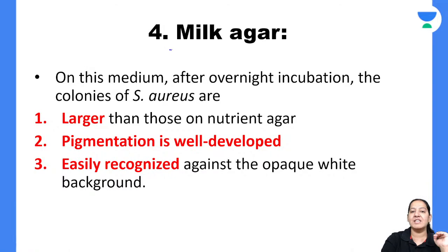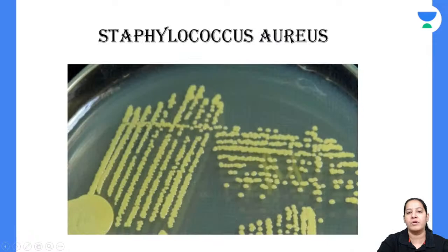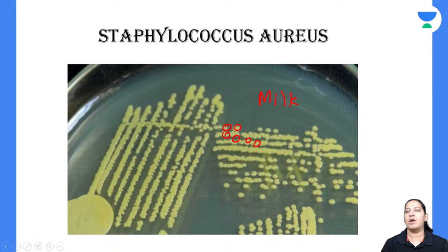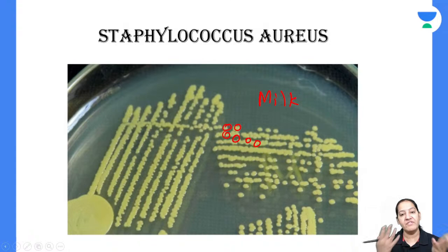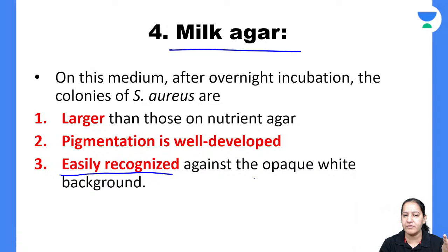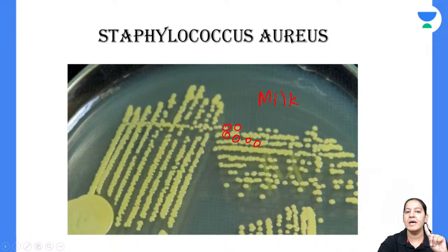Milk agar has an opaque white background. On milk agar, Staphylococcus aureus also gives golden yellow colonies, just as on nutrient agar. However, because milk provides an opaque white background, the golden yellow colonies are more easily visible and recognizable compared to nutrient agar, where the background is transparent.